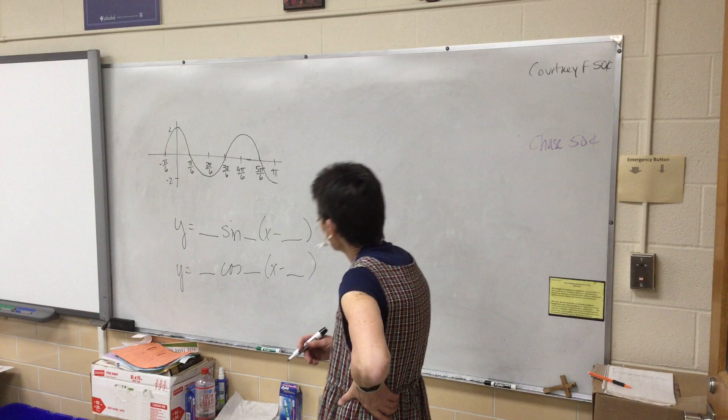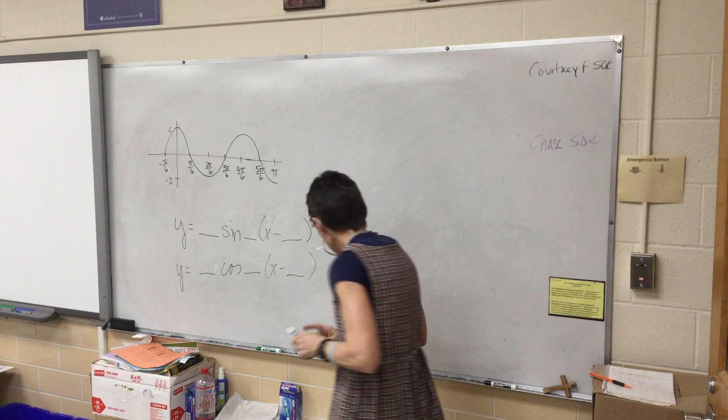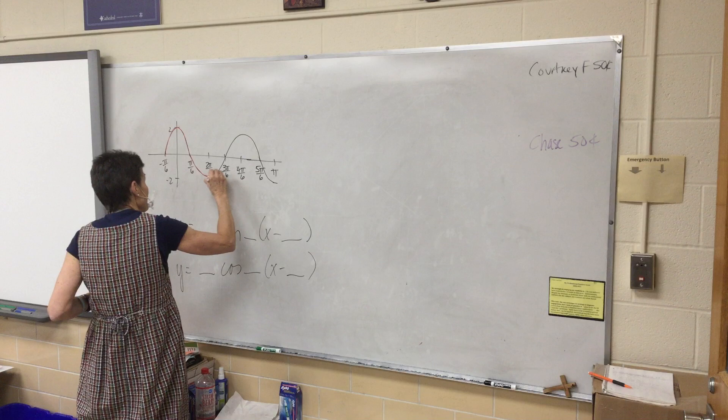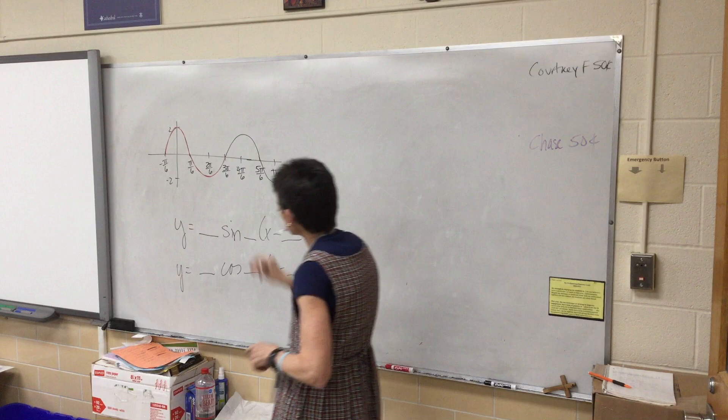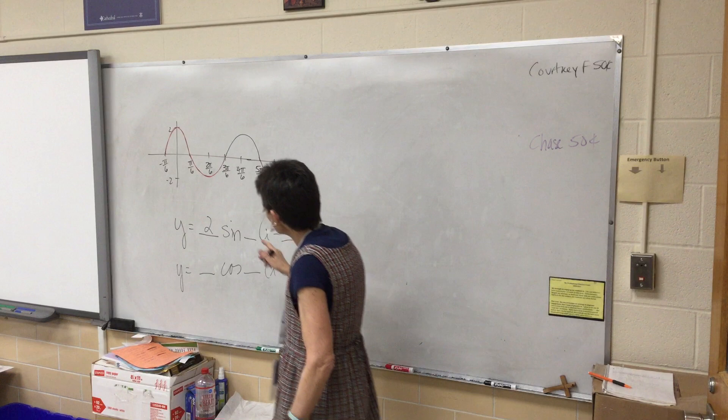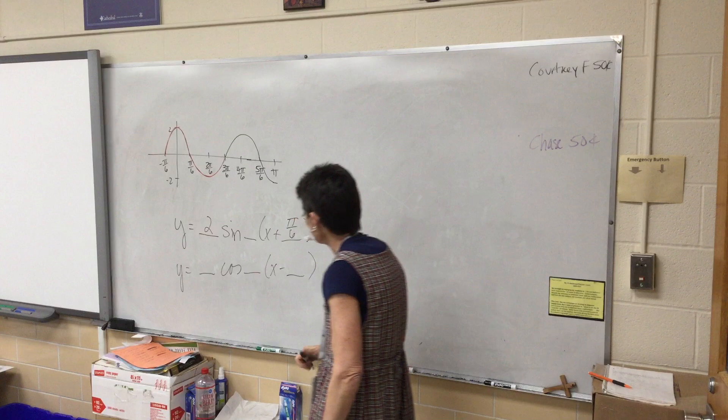The only thing that might be different is where we start looking at the picture. Looking at it as a sine — you're probably starting right here. If that's a sine, its amplitude is 2.